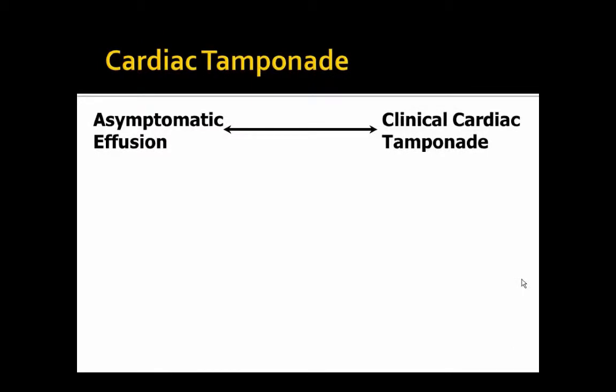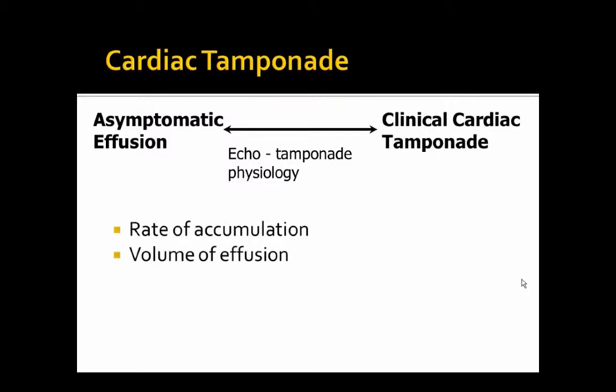The most important reason to recognize a pericardial effusion is to recognize a patient who's in cardiac tamponade. A patient with an asymptomatic effusion is on one end of the spectrum, and the patient who is hypotensive, tachycardic, or possibly even in cardiac arrest is on the far other end. There are a lot of gradations in the middle, and you'll have to correlate that with your whole clinical picture. It depends on how fast it accumulated, how big it is, and what their intravascular volume status is.